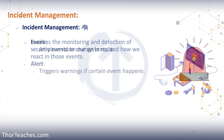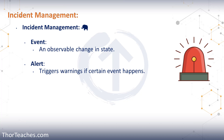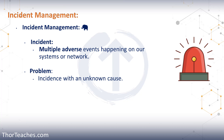First, we looked at the definitions. An event is an observable change in state — it's not positive, it is not negative, it is just something that happened. That can be traffic on a specific networking segment or a server powering on. Then we had an alert, which is a triggered warning when certain events happen. This is something we pre-configure — for example, networking traffic on a segment has above 75% bandwidth utilization for more than two minutes, or a server using above a certain threshold of memory for a certain amount of time.